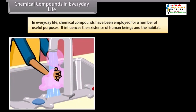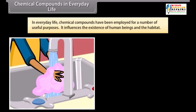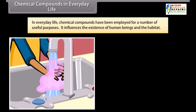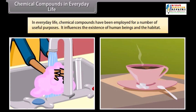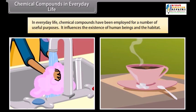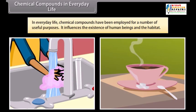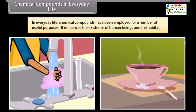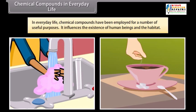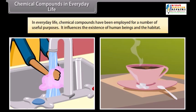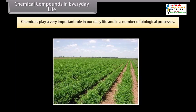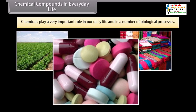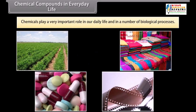In everyday life, chemical compounds have been employed for a number of useful purposes. For example, sugar is used to sweeten tea, soaps are used for washing and bathing purposes, etc. It influences the existence of human beings and the habitat. Besides those, a number of compounds find application in agriculture, textiles, medicines, photography, etc. Thus, chemicals play a very important role in our daily life and in a number of biological processes.